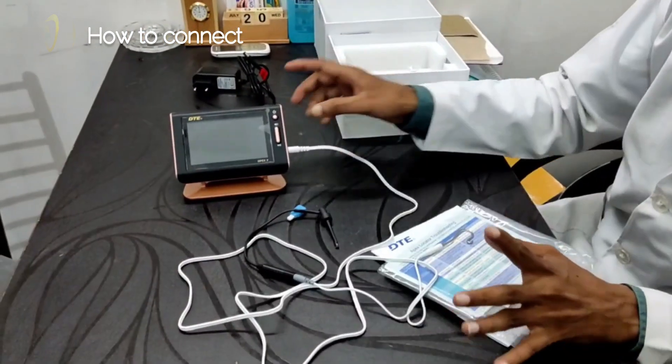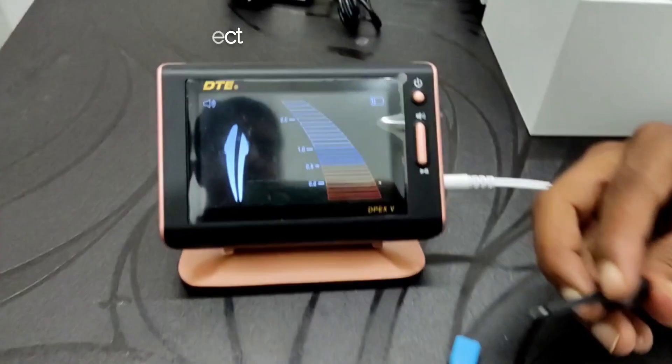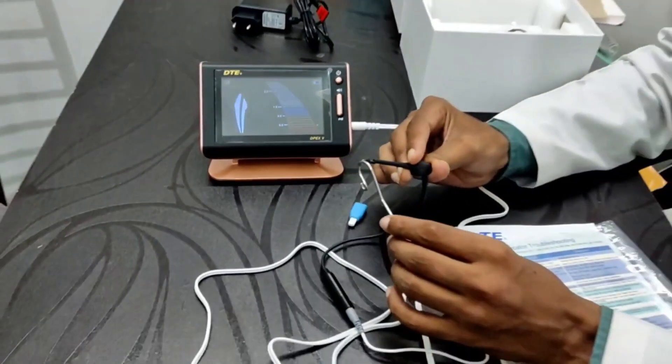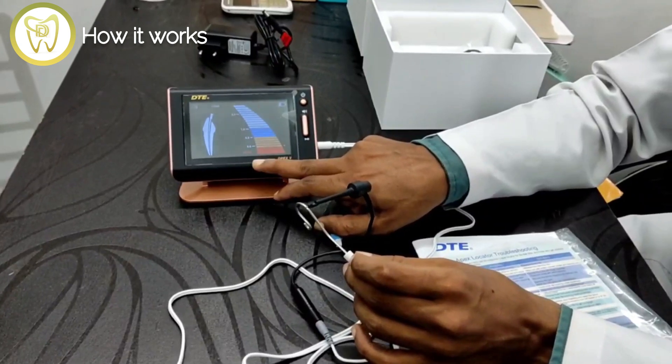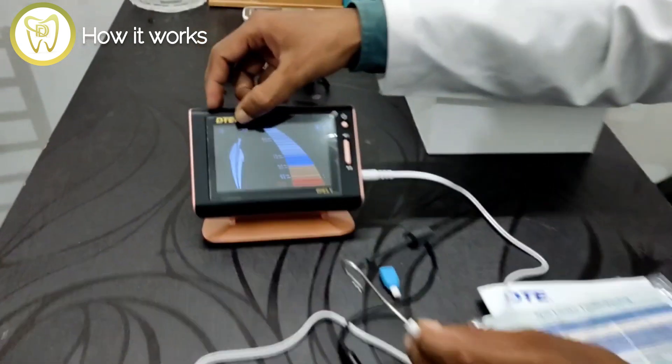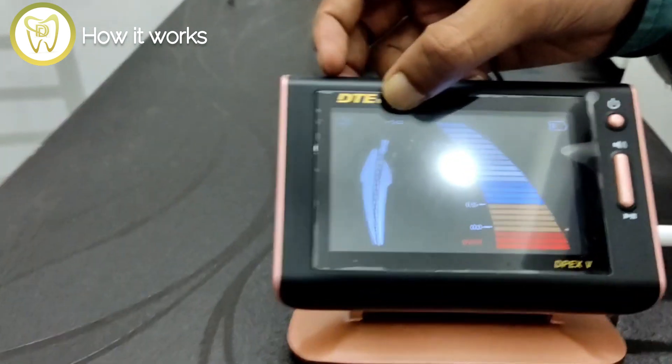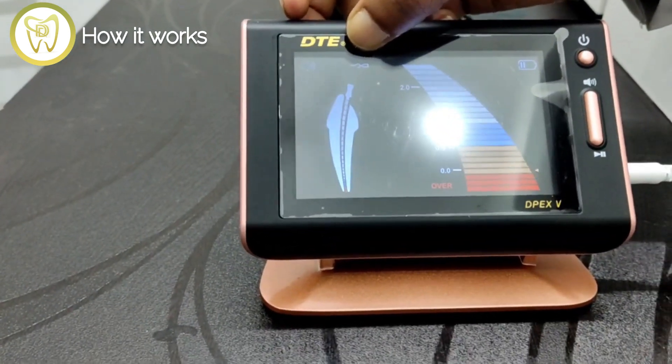Now I am showing how it works. Let's see. It shows that I have reached over the pulp or out of the apex, and this is the sign that it is connected.